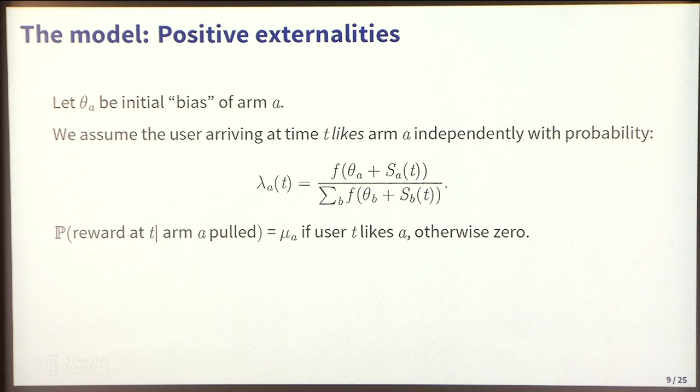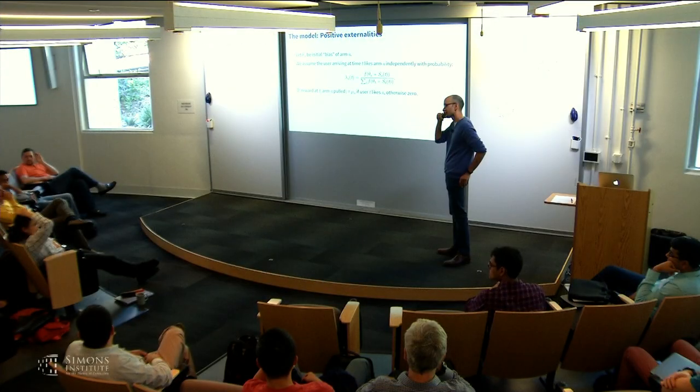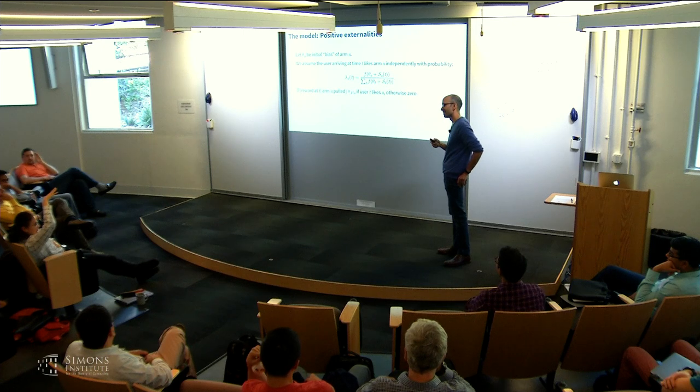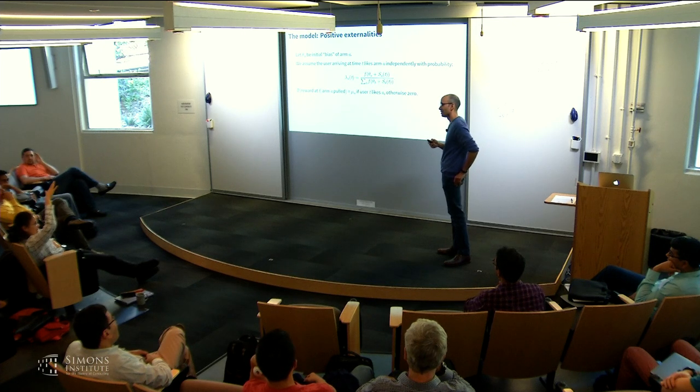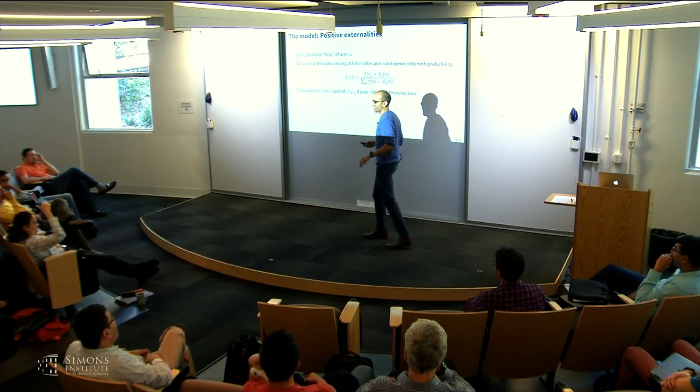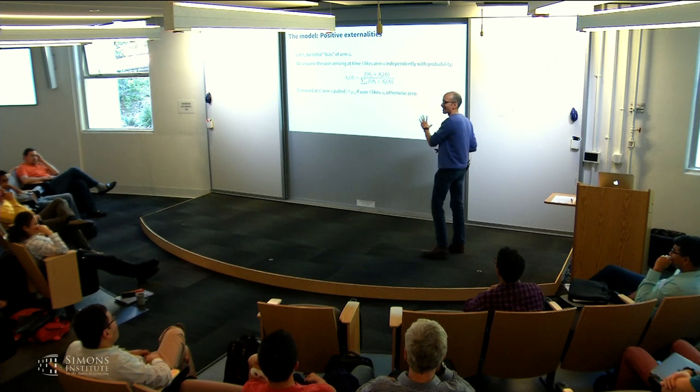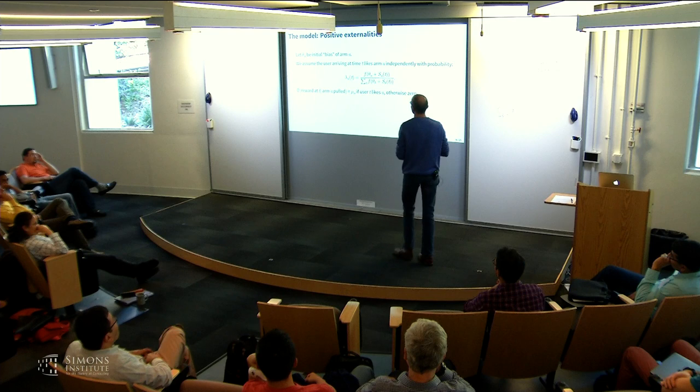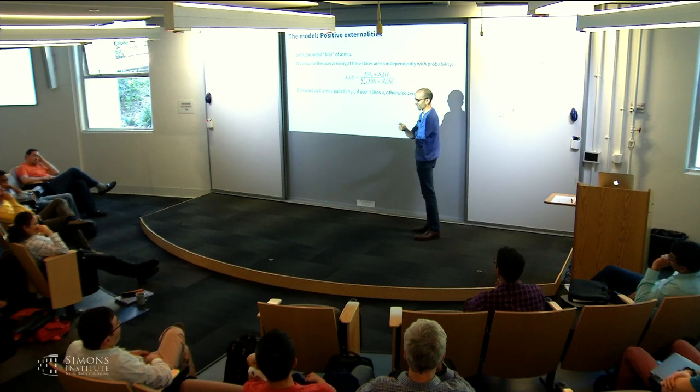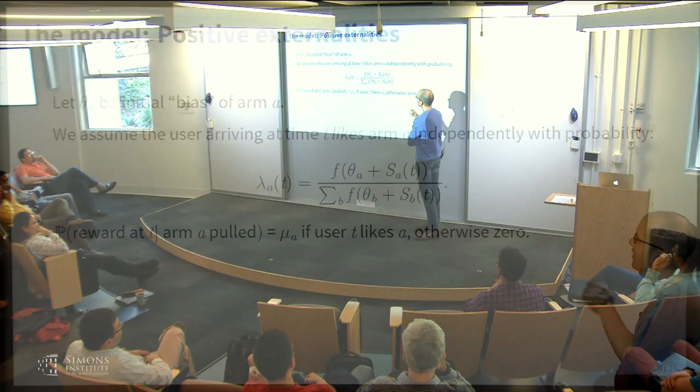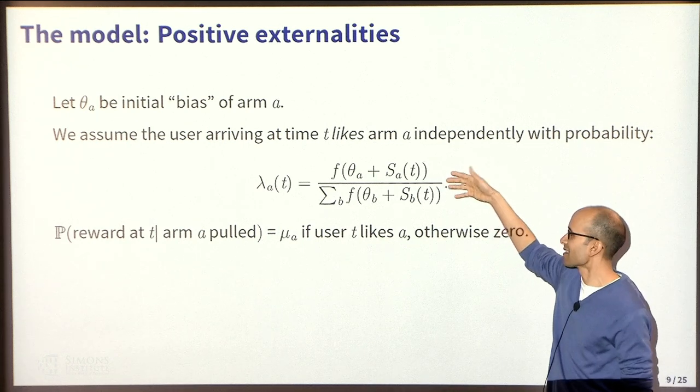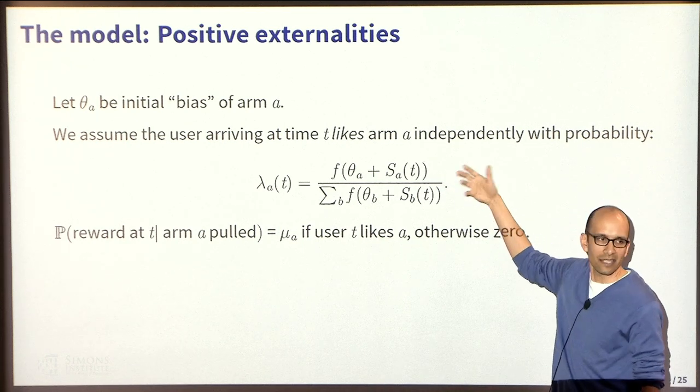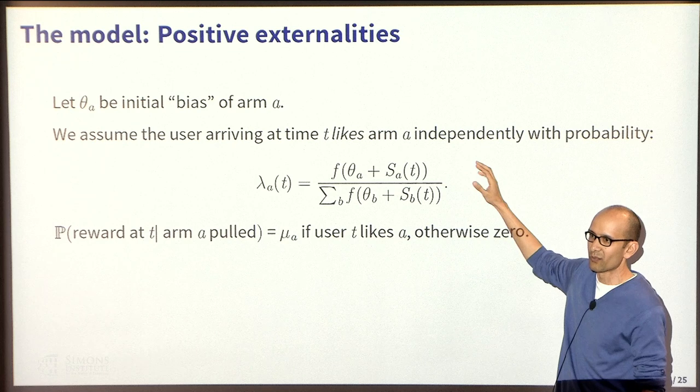What does like mean? I need to translate that into the preferences of this person and how that influences the bandit. Here's the key: if a user likes arm A, then I have the standard bandit model. Mu A is the probability of generating a reward when I pull arm A for this user. The difference is what if this user does not like arm A - in that case I get nothing when I pull arm A. There's two ways that an arm can fail here. One way is that the user simply doesn't like the arm. Then the other way that arm A can fail is that the user does like the arm, but it happened to be one of those cases where randomly you just didn't get a reward.